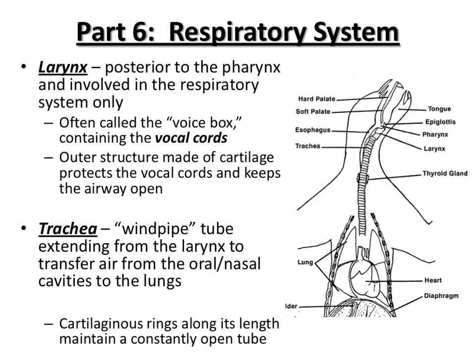Just past the larynx is your trachea, which you might remember from histology — this is your windpipe. It's a tube that allows airflow down to the lung area. It has cartilaginous rings along its length that help keep this tube open. Whereas the esophagus is always closed, the trachea we want to stay open at all times so that your airway remains open.